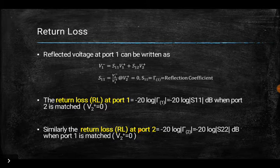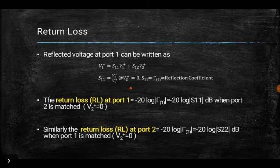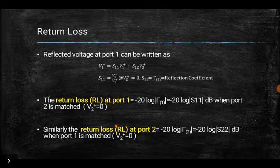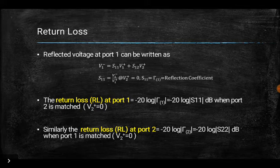Return loss at port 2 is −20·log|S22| in dB. Return loss is one of the key quantities to check how well ports are matched — how little reflection there is. We always prefer return loss to be as high as possible. In practice, we compare return loss between devices to decide which is better for use in circuit design.